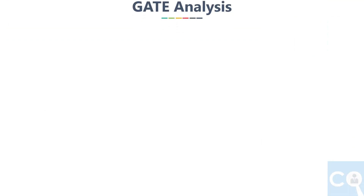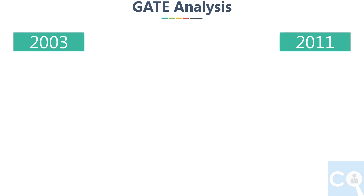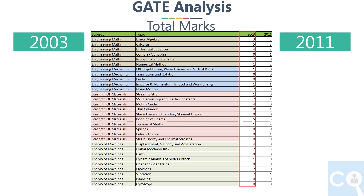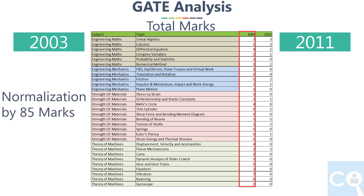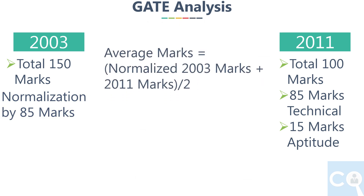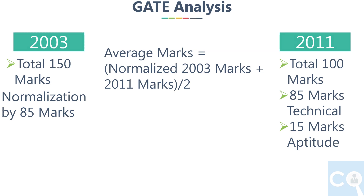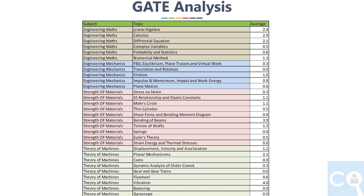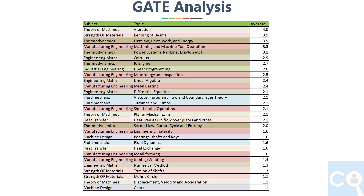Since we discussed earlier, we will concentrate on the 2003 and 2011 papers and see the distribution of marks asked in these years. I listed total marks asked per topic, then normalized the 2003 paper to 85 marks — because the 2003 paper was out of 150 marks total, while in 2011 the technical part was 85 marks, as 15 marks of aptitude was added from 2010. To compare fairly, we normalized the 2003 markings to 85 marks and took the average of the normalized 2003 and 2011 marks. The 1st column is subject, 2nd is topics, and 3rd is the discussed average — sorted from largest to smallest to get the most important topics.